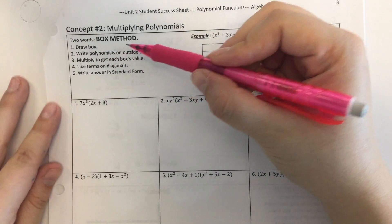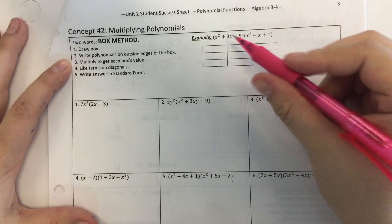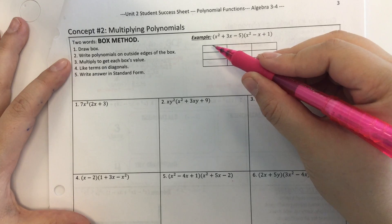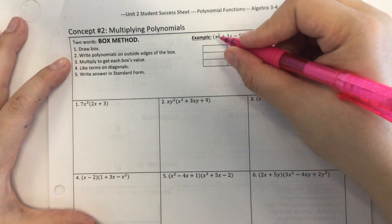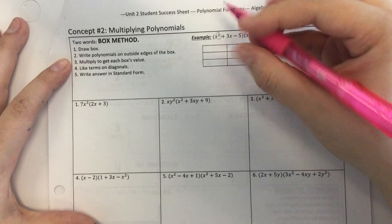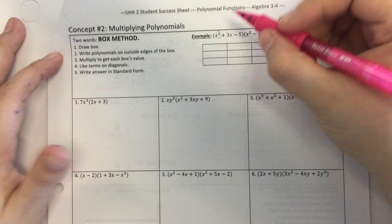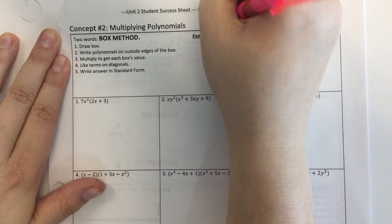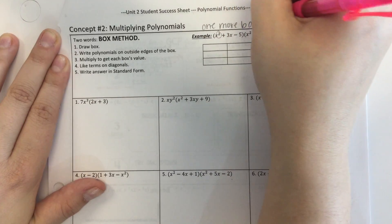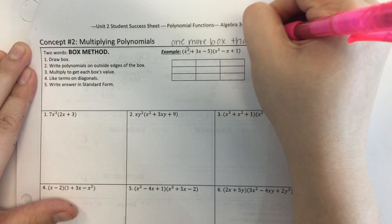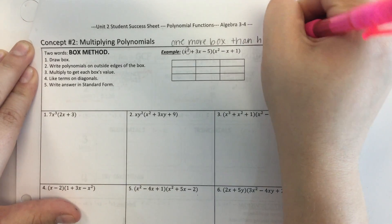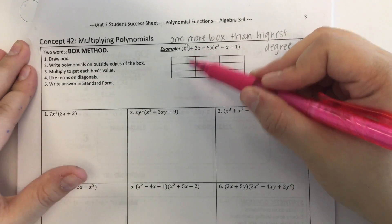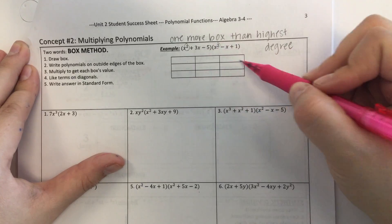Here's the steps you're going to take to do the box method. You're going to draw a box. So you want your box to be one more than the highest degree. So this highest degree is 2, so I want 1, 2, 3. Three boxes, so one more than the highest degree. For this one my highest degree is 2, so I'm going to write 3. This one my highest degree is also 2, so I'm going to write 3.